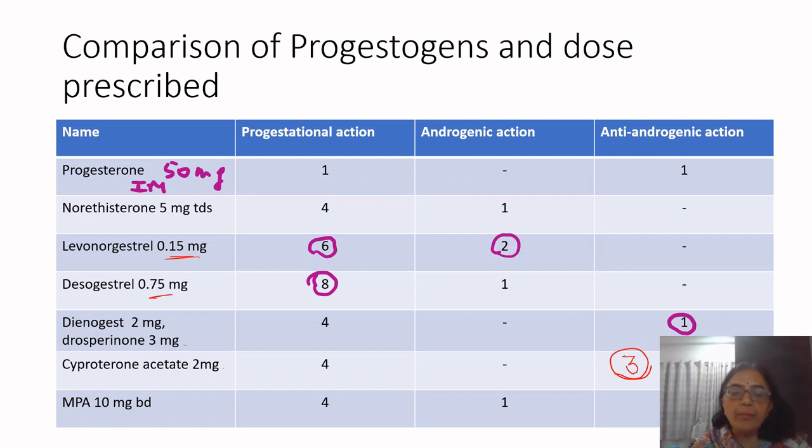Medroxyprogesterone acetate tablets are available as 10 mg and are usually given twice a day.